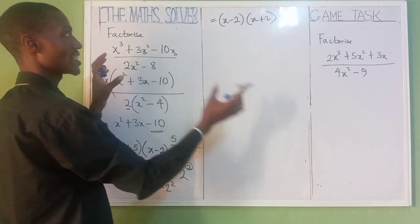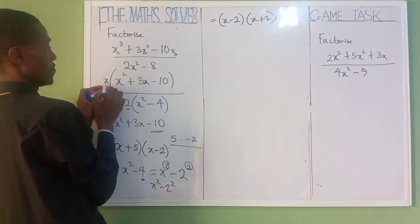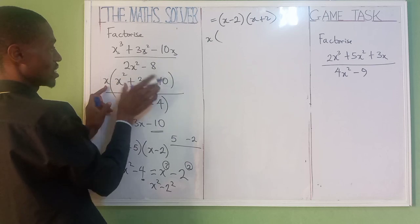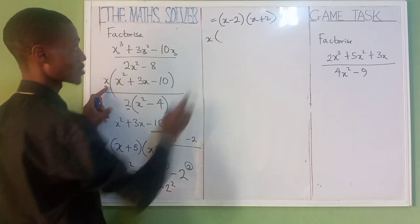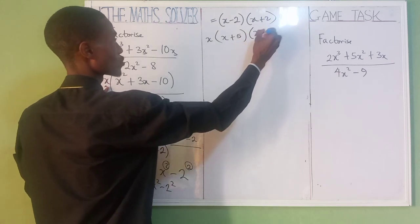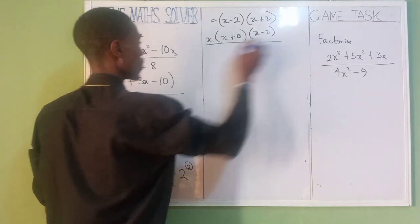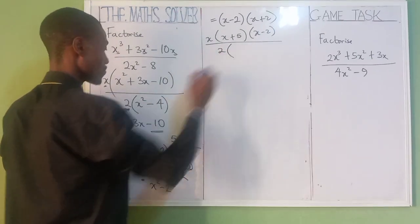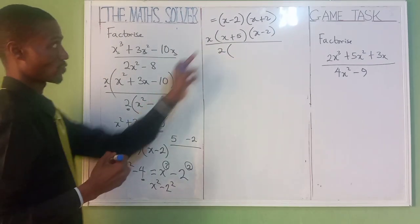We have factorized everything. Let's now bring them together. Based on the first one, x is outside. After factorizing, we got x(x + 5)(x - 2) for our numerator. Let's go to our denominator. We have 2 first. Then we factorized x² - 4,